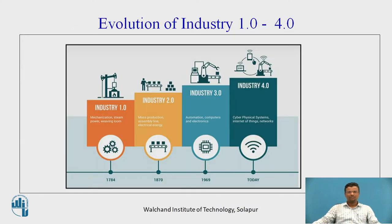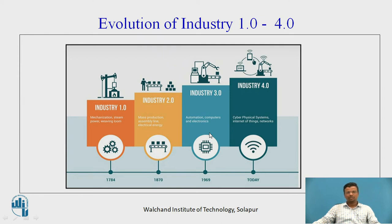We will see the evolution of Industry 1.0 to 4.0. In 1784, there was the development of Industry 1.0, with the steam power engine. In 1870, Industry 2.0 developed, with mass production using different CNC machine tools. In Industry 3.0, approximately in 1969, there was the use of industrial automation, CNC machine tools, material handling system components, flexible manufacturing system, and computer integrated manufacturing.